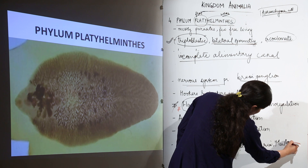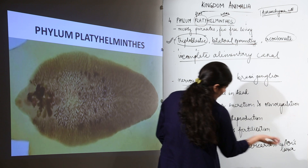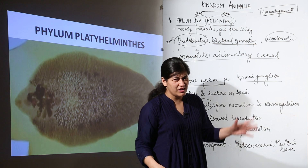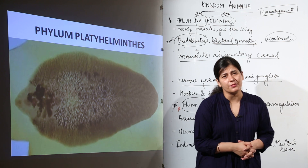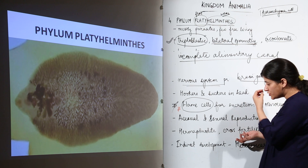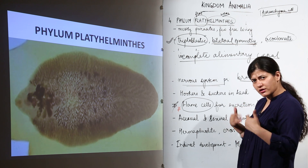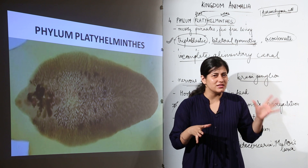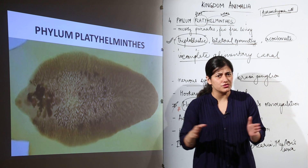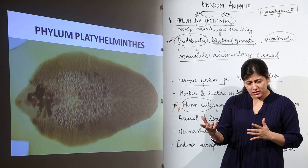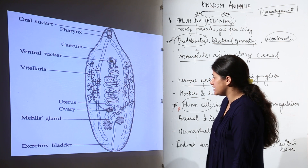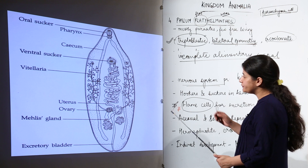In platyhelminthes, there are several types of larvae — metacercaria, Muller's larvae, cercaria, and others. You need to remember any two names. Different classes of platyhelminthes have different larvae. Muller's larvae is the most common and most important from a learning perspective.